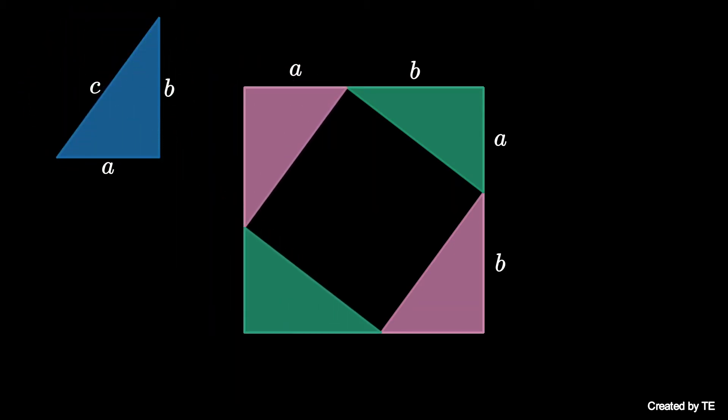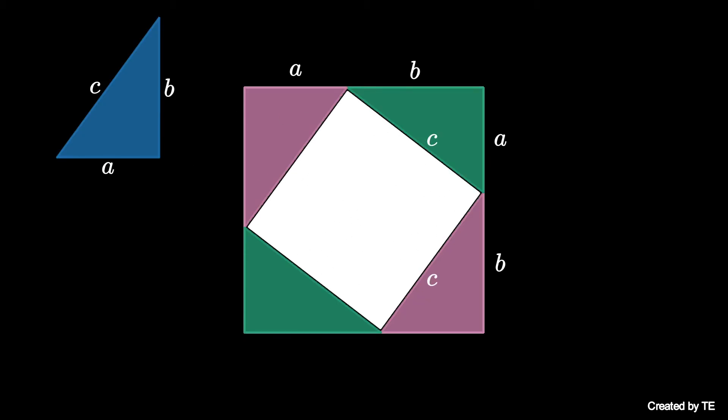Notice that the space in the square not covered by the triangles is a square of side length c. Therefore, this unshaded area is c squared.